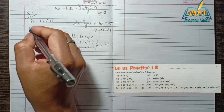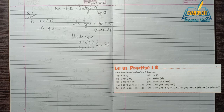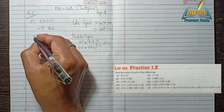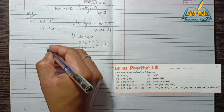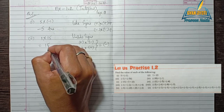So in this case our product is minus 5. For the second question, 1 into 15: both are positive, so the product is positive. 1 times 15 equals positive 15.